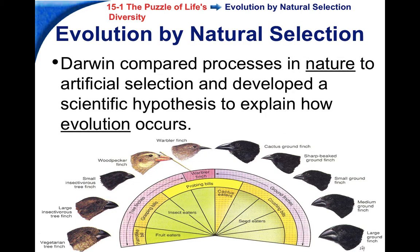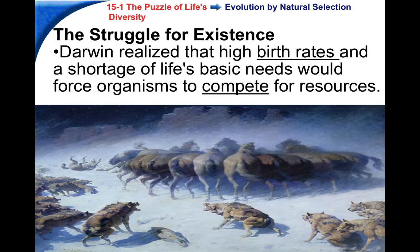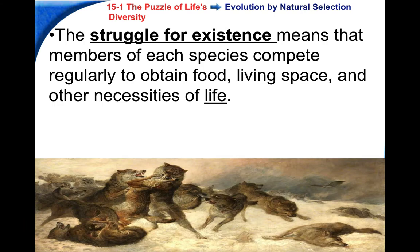Darwin realized: if humans can cause changes in organisms, why can't nature? This is the basis of his idea called natural selection. Darwin realized that all organisms have to compete for resources, and most organisms produce way more offspring than can possibly survive. So organisms have to compete with each other for survival. This struggle for existence means organisms of the same species compete for food, living space, mates, and other necessities of life — and this was key to his idea of evolution.